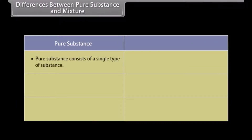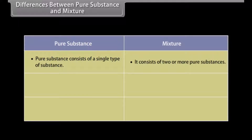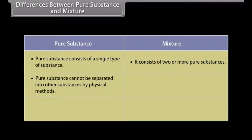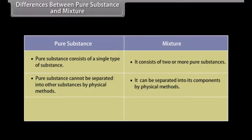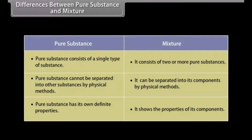Differences between pure substances and mixtures. A pure substance consists of a single type of substance, whereas mixtures consist of two or more pure substances. A pure substance cannot be separated into other substances by physical methods. A pure substance has its own definite properties, whereas a mixture shows the properties of its components.